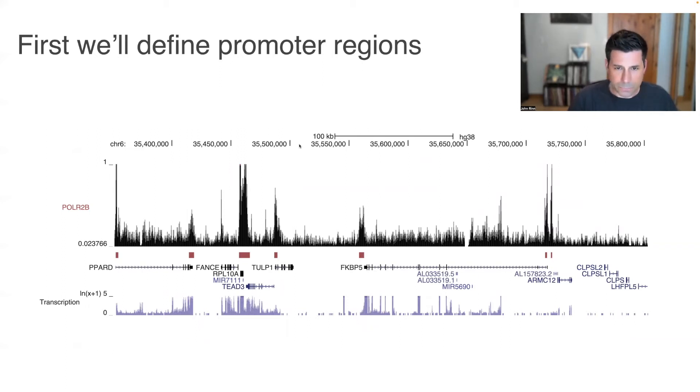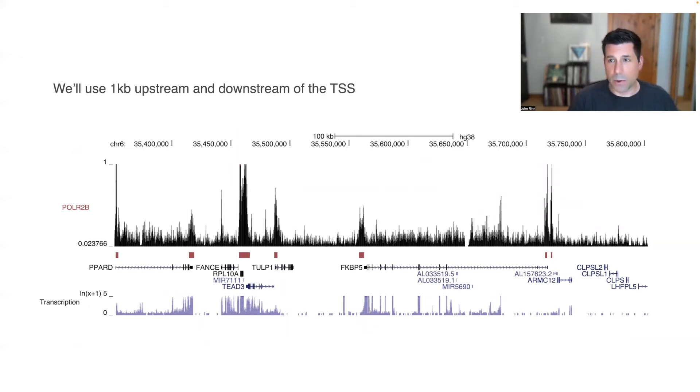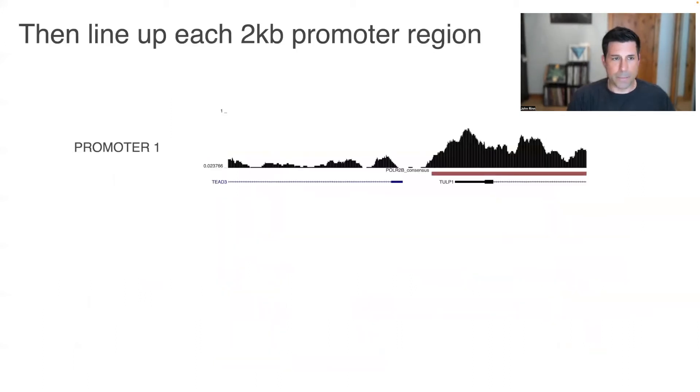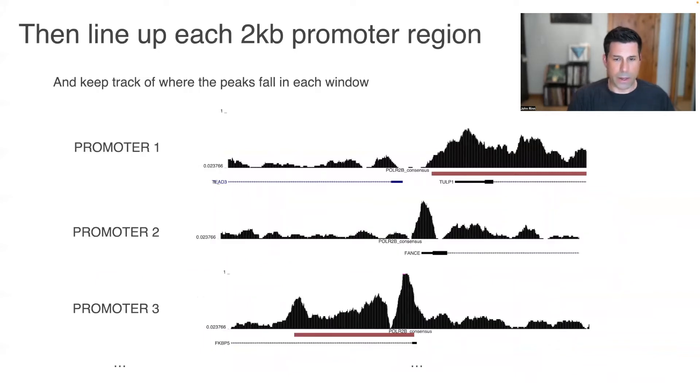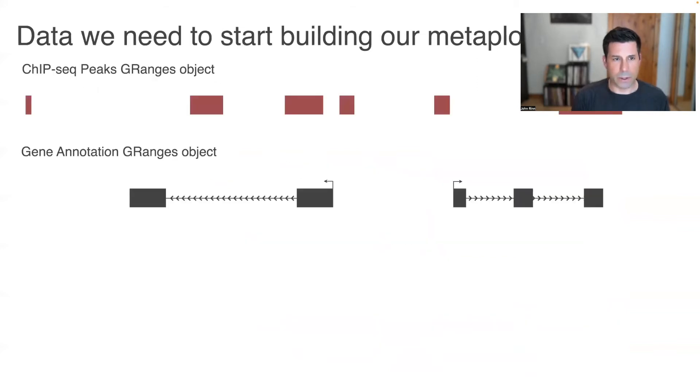We're going to step through it conceptually, and then we'll go through it in the next video by code. First thing we need is promoters. We've made that several times, and we'll just load in our long non-coding mRNA promoters file from O1 peak features.